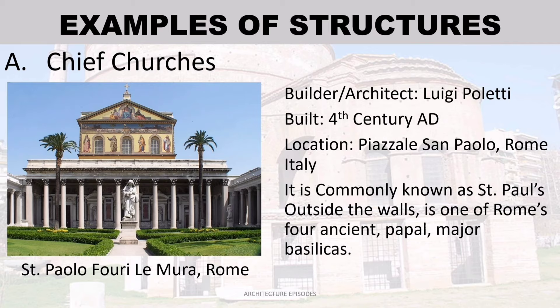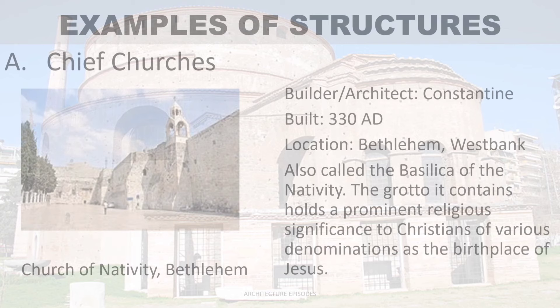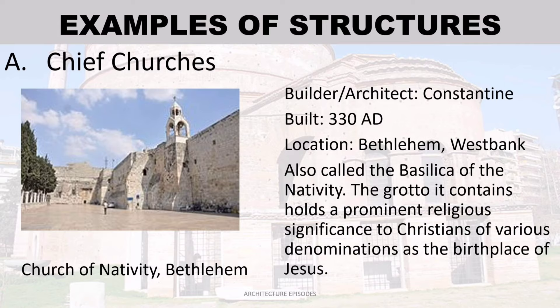Saint Paul's Outside the Walls, Rome — its builder is Luigi Poletti, built approximately in the 4th century AD, located at Piazzale San Paolo, Rome, Italy. It is commonly known as Saint Paul's Outside the Walls and is one of Rome's four ancient papal major basilicas. Church of the Nativity, Bethlehem — builder: Constantine, built approximately 330 AD, located at Bethlehem. The grotto it contains holds prominent religious significance to Christians as the birthplace of Jesus.